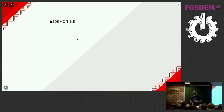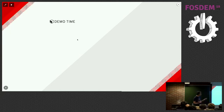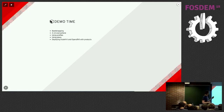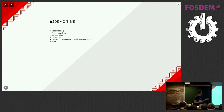That's pretty much everything I wanted to cover. I didn't want to talk too much, but I already did. So let's go with the live demos. The idea is to show bootstrapping, then create a VM in several places, use profiles, use plan files, then explain how to deploy KubeVirt and OpenShift using products, and if we have enough time, show the web interface and Ansible integration.